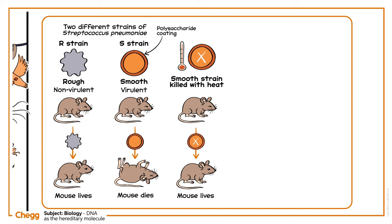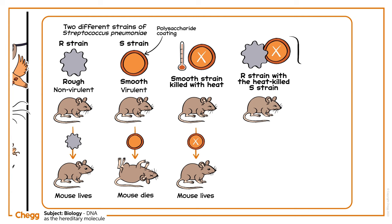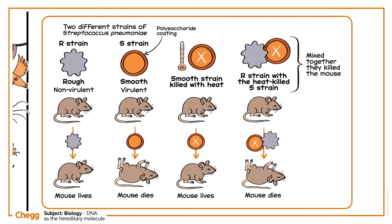The final step of Griffith's experiment was when things took an unexpected turn. Griffith mixed the living R strain bacteria — that's the non-disease-causing strain — with a heat-killed S strain. Even though neither of these strains killed mice on their own, mixed together, they did. And when he isolated colonies of bacteria from the dead mice's blood, he saw that they contained living S strain bacteria with their characteristically smooth coating.